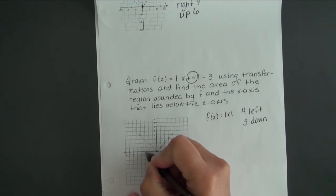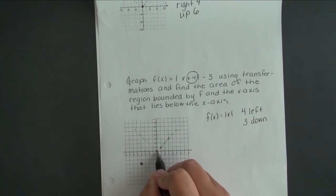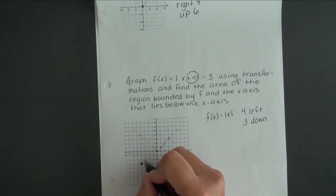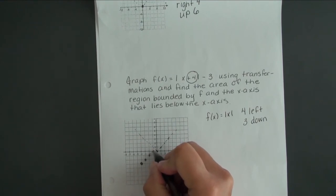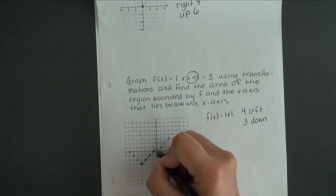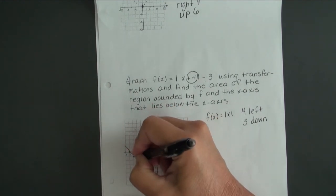So 1, 2, 3, 4... 1, 2, 3—that's my new point at the bottom of the V. Then you shift each other point that's on that V 4 left and 3 down. Just go 4 left and 3 down, 4 left and 3 down, and we get a V that looks like that.